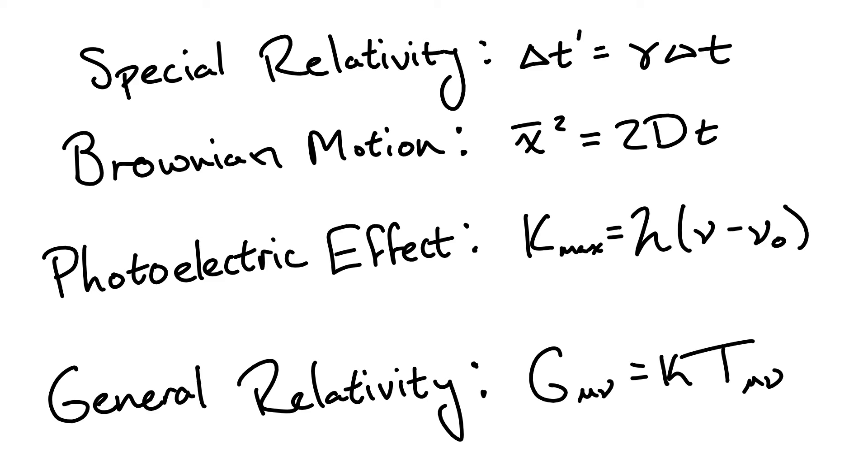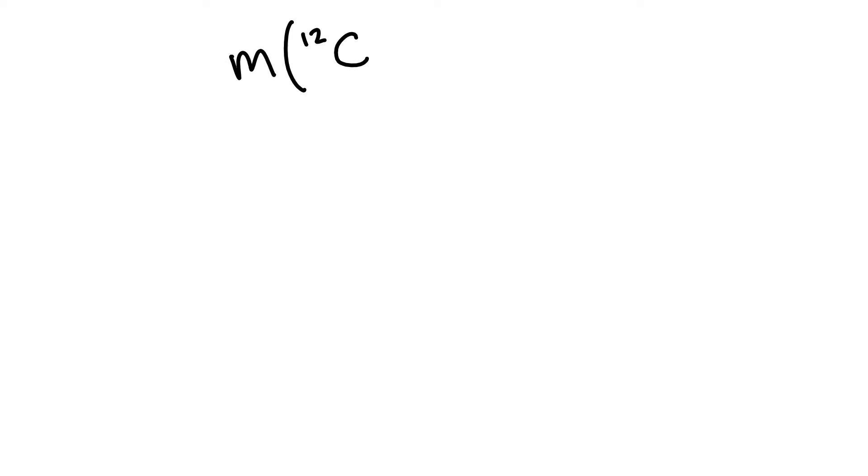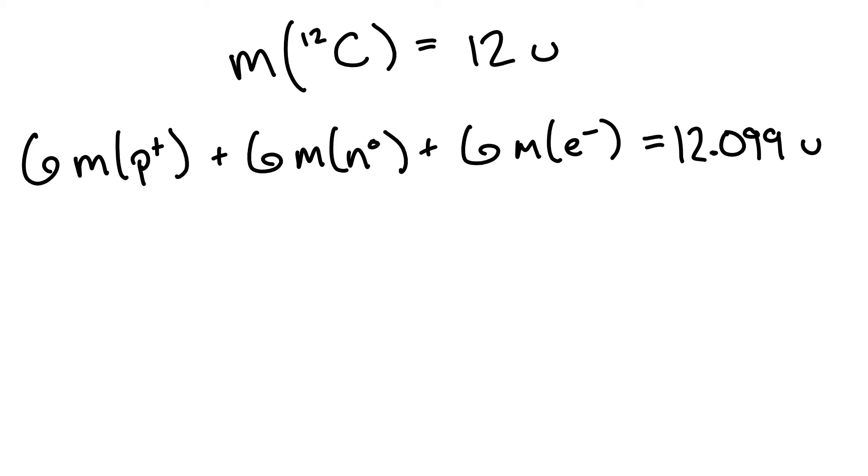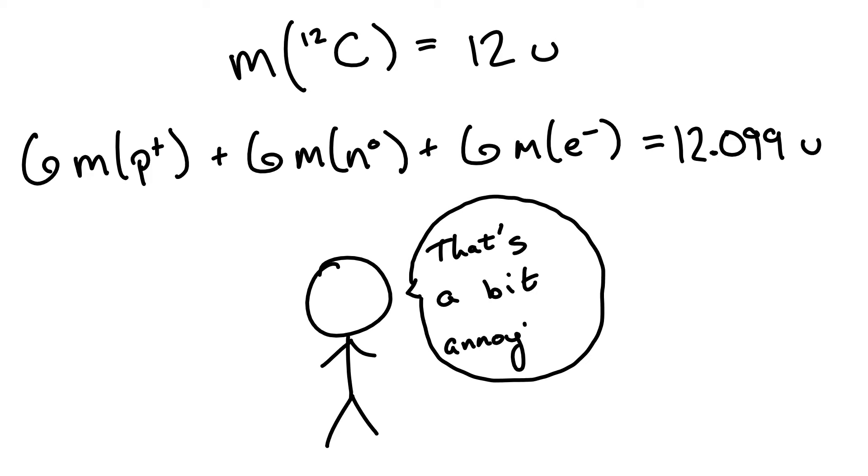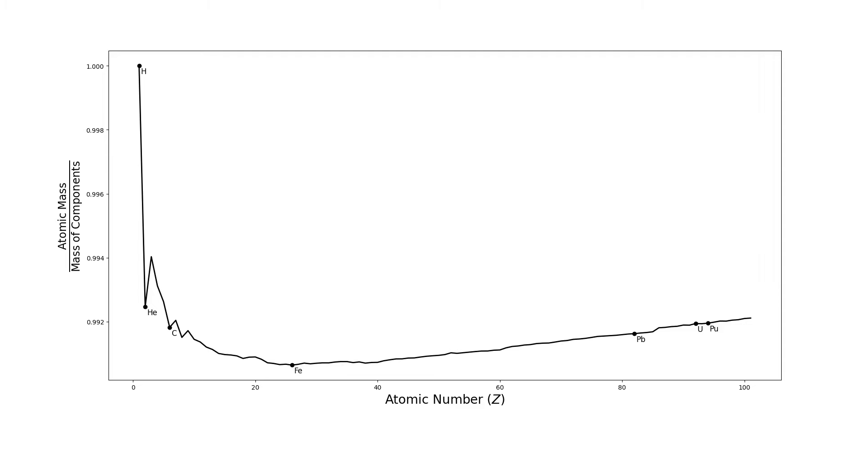If one compares the mass of an atom to the sum of masses of all of its protons, neutrons, and electrons, you don't get the same answer. In fact, after the discovery of the neutron in 1932 by James Chadwick, atomic and nuclear structure was studied in more depth, and they found this result. In this plot, I'm showing the ratio of the mass of atoms divided by the sum of the masses of atoms' components against the atomic number. There's a few things to notice here.